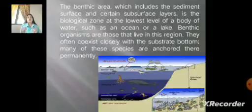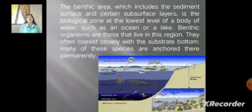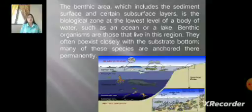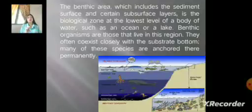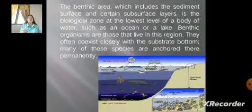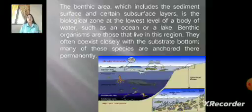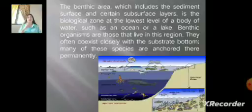Benthic organisms often coexist closely with the substrate bottom, and many species are anchored there permanently. In the ocean, the benthic zone is often so far below the surface that sunlight is unable to penetrate the large column of water above and reach it. Because of this, organisms capable of photosynthesis are not found there.